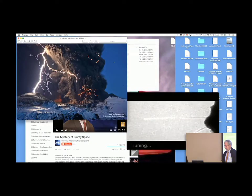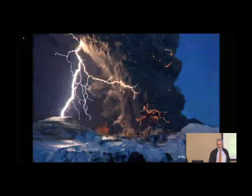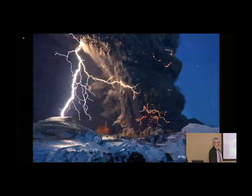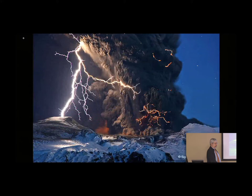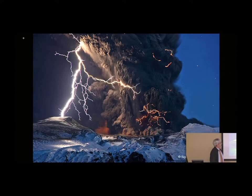Here is a nice picture of other lightning. That's the ash coming out of a volcano—it's ionized, and so there are all kinds of discharges going on around the plume.